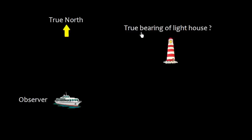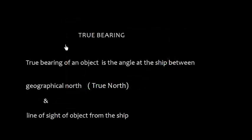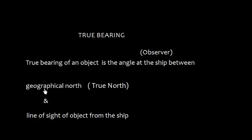In this video I'm going to explain what is a true bearing of an object. Suppose this is a lighthouse and we need to find the true bearing of that lighthouse, and we are on the ship — so this is the observer. This direction is true north from the observer, and this is the line of sight of the object from the observer. So this angle is going to be the true bearing of the lighthouse. The true bearing of an object is the angle at the ship — that is, the observer — between the geographical north or true north and the line of sight of the object from the ship.